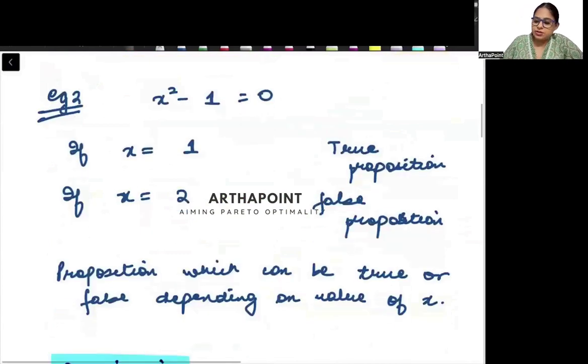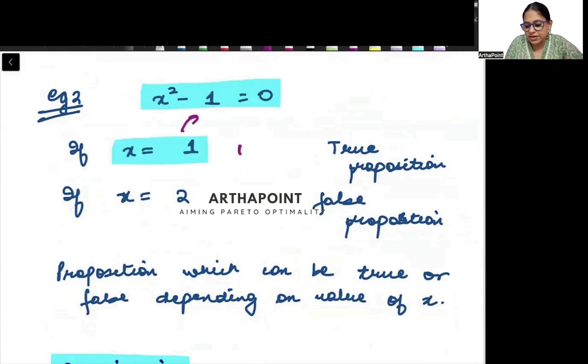Now take this example. This says x square minus 1 is equal to 0. Now, is this true or false? You will tell me ma'am, I don't know. It can be true also. Agar x ka value 1 daal denge, so this statement true ho jayega. 1 minus 1 is equal to 0. But agar x ka value 2 daal denge, if I will plug 2 here, so 2 square is 4 minus 1, that means 3. Toh ma'am, here it is true and here it is false.